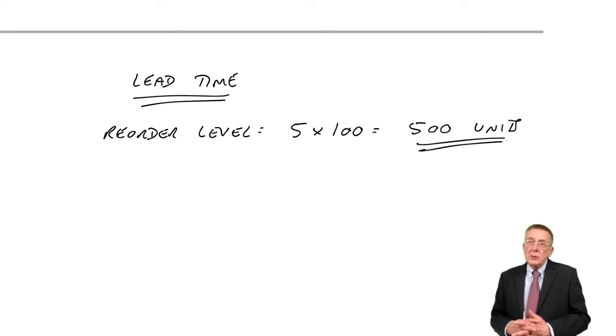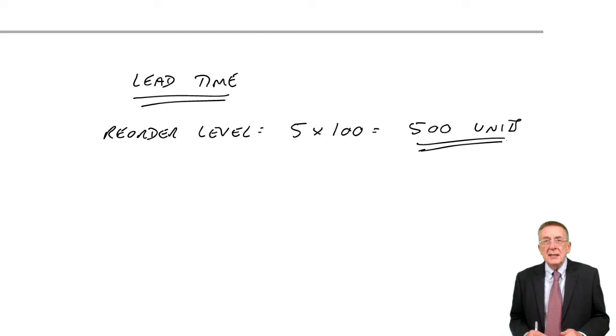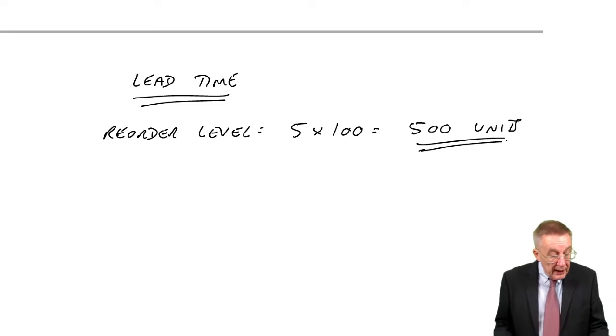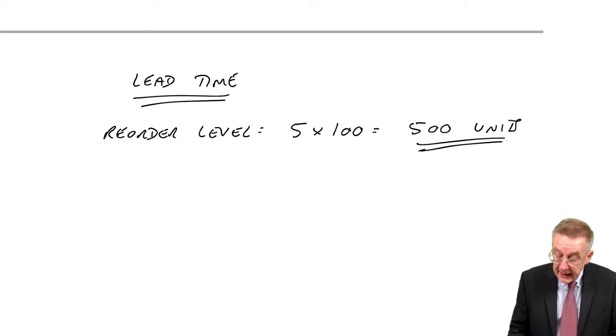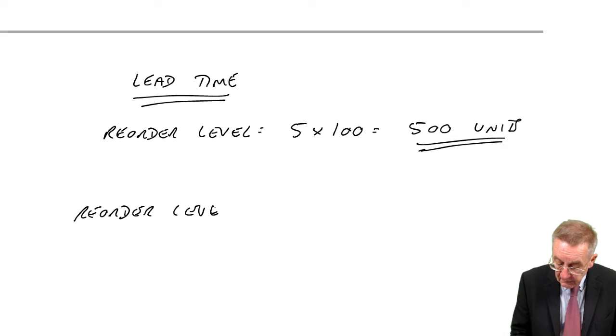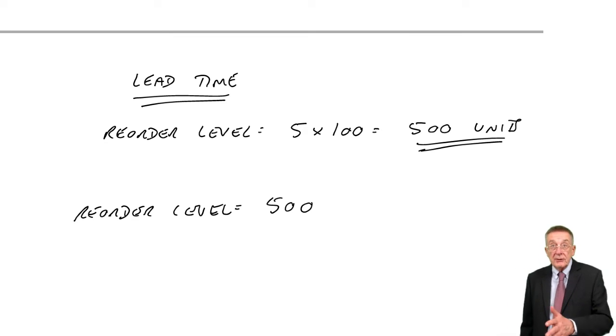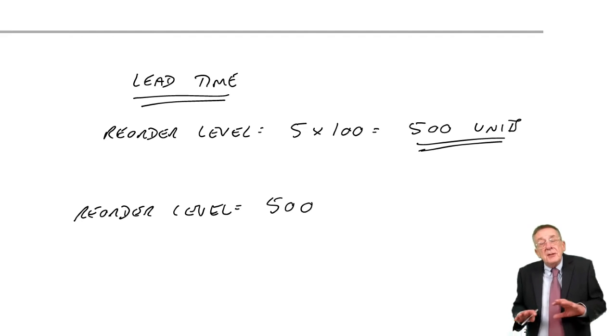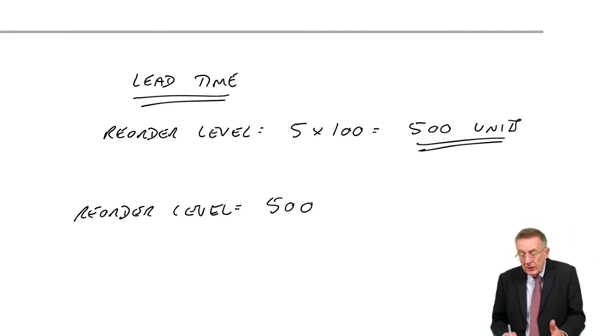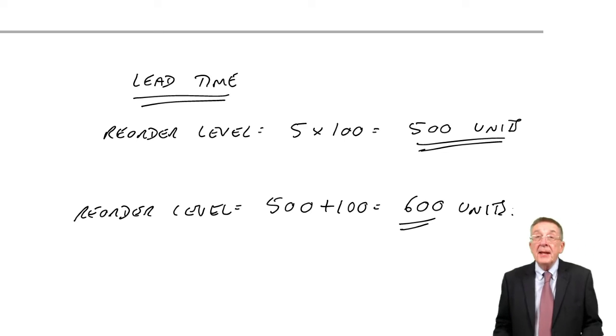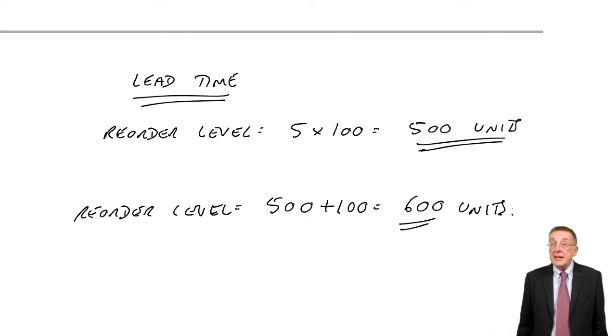Just in case things go wrong, maybe it'd be a good idea to order when we've a bit more. And so the amount we'd order here, the reorder level, it'd be the amount we think we're going to need 500, the same reasons as before, five weeks, 100 a week. But just to be safe in case there was a delay or something, we'll make sure that we reorder when we've 100 more than we think we need. We'll reorder when we've 600 units left.